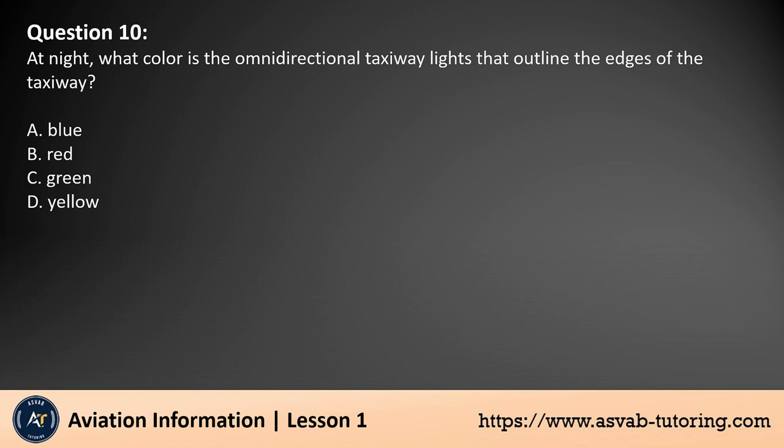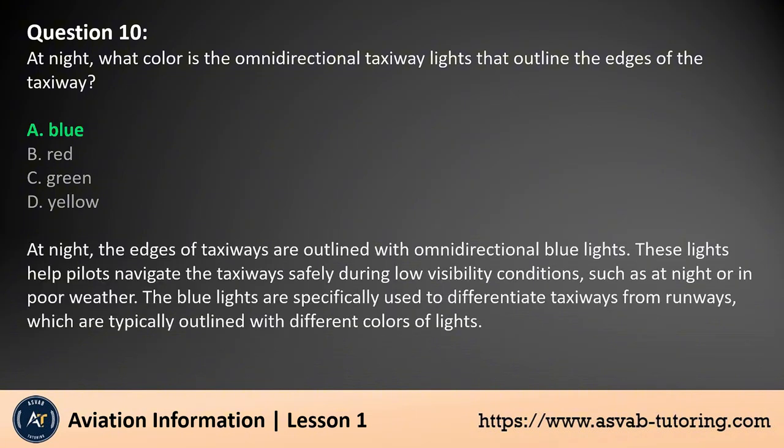Question 10. At night, what color are the omnidirectional taxiway lights that outline the edges of the taxiway? A. Blue. B. Red. C. Green. D. Yellow. The answer is A. At night, the edges of taxiways are outlined with omnidirectional blue lights. These lights help pilots navigate the taxiways safely during low visibility conditions, such as at night or in poor weather. The blue lights are specifically used to differentiate taxiways from runways, which are typically outlined with different colors of lights.